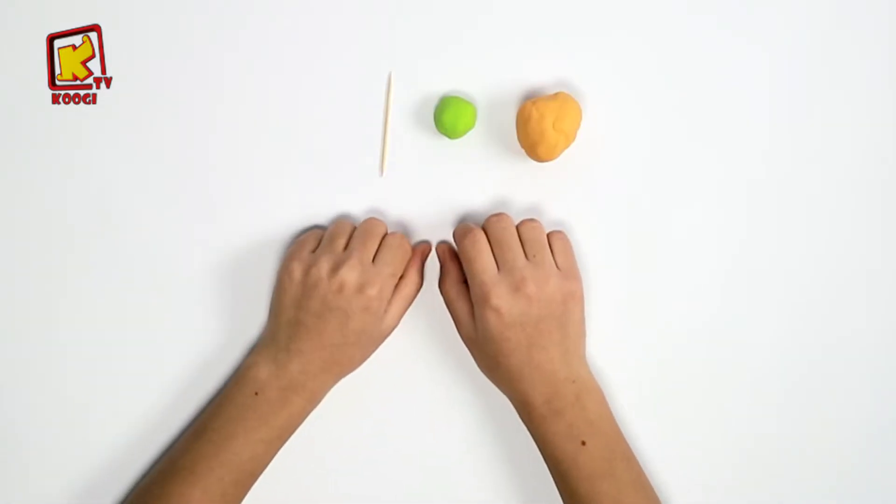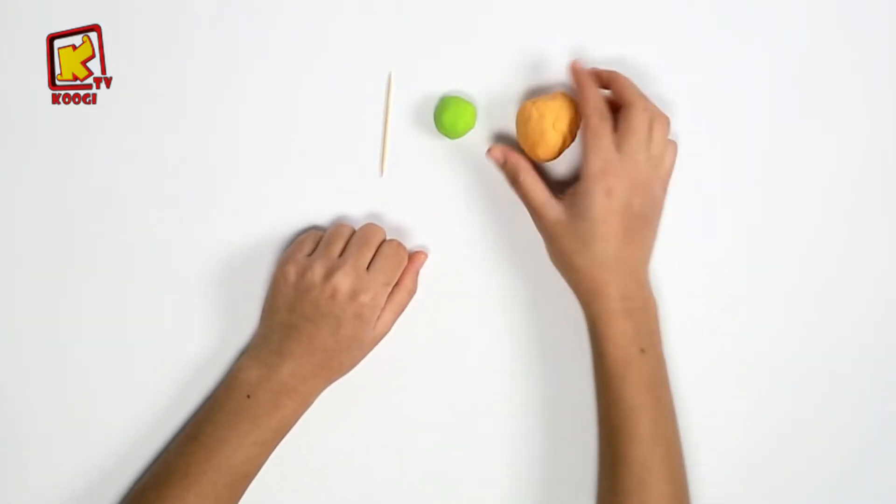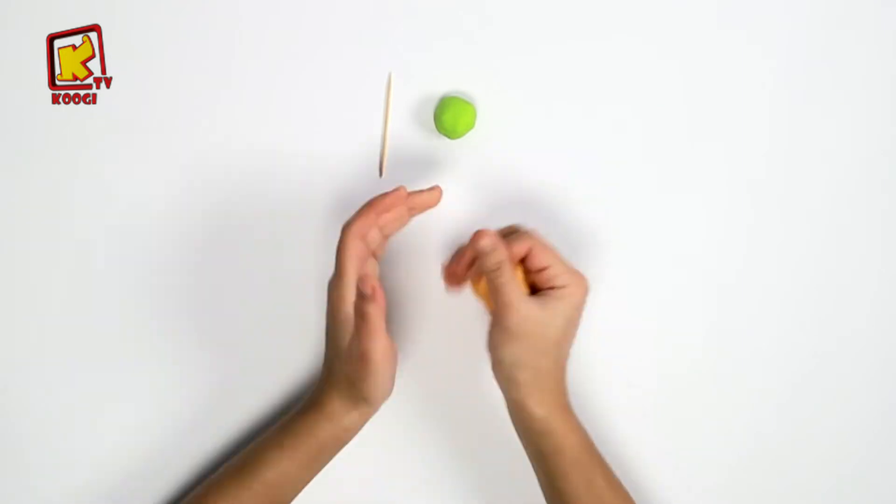Prenons une partie de l'argile jaune et on va le moduler pour faire le corps du maïs.